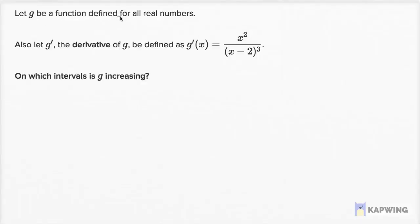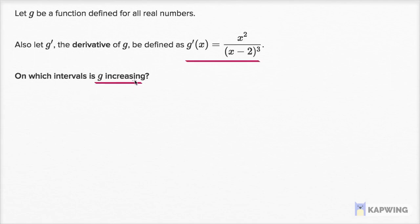Let g be a function defined for all real numbers, with g prime of x equal to x squared over (x minus 2) to the third power. On which intervals is g increasing? We don't need g itself — all we need is g prime. Saying g is increasing is equivalent to asking on which intervals is the first derivative greater than zero. If your rate of change is positive, your function is increasing.